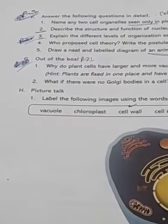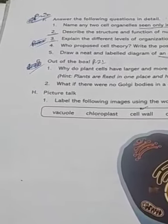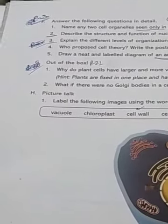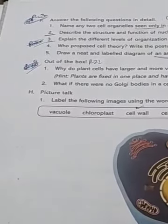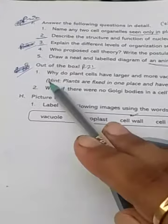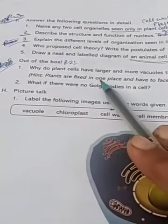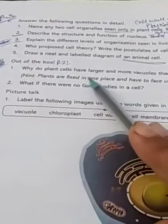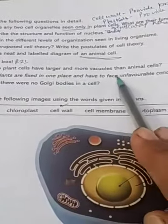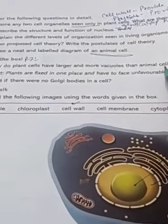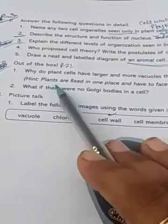Hello Class 8 students. This is Part 21, Chapter 7, Exercise G — Out of the Box. Here is question number one: Why do plant cells have larger and more vacuoles than animal cells? A hint is provided to you.